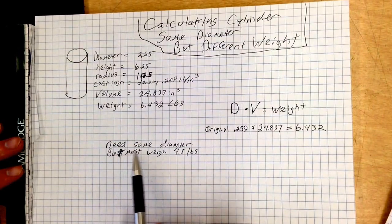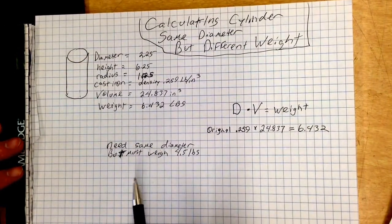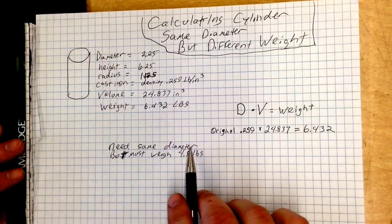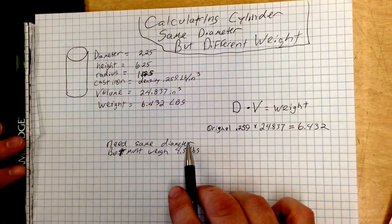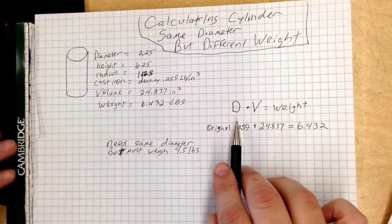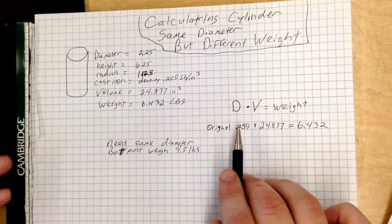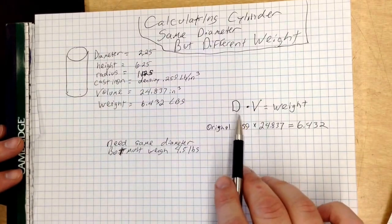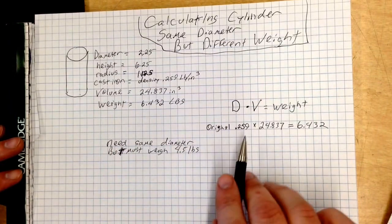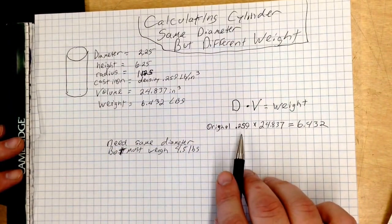So, we need to figure out a cylinder that weighs 4.5 pounds but maintains the same overall diameter that we have been working with. Now, we're going to be working backwards through some of our equations. So, let's start with this one. Density times volume equals weight for us, and this is how we figured out originally.